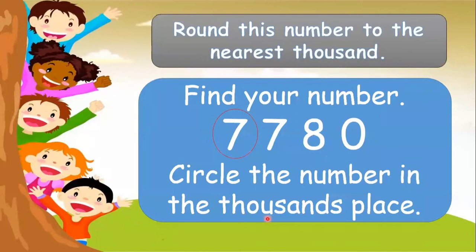Round this number to the nearest thousand. The given number is 7,780. Find your number and circle the number in the thousands place. The number which is in the thousands place is number seven.